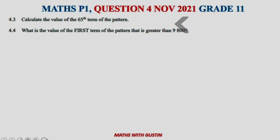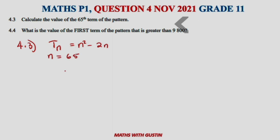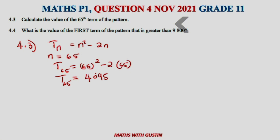4.3 asks us to calculate the value of the 65th term. Since tn equals n squared minus 2n, substitute n equals 65: 65 squared minus 2 times 65. Putting this in the calculator should give an answer of 4095. If this is not right, please let me know in the comments.